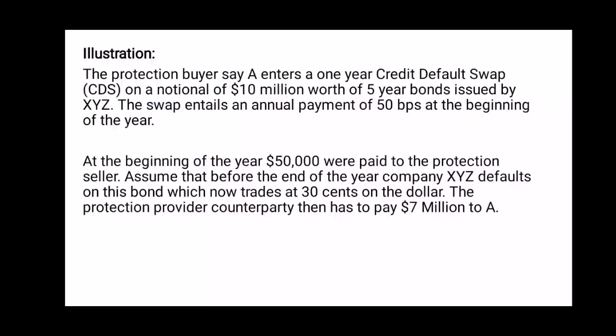To summarize the illustration: protection buyer A enters into a 1-year credit default swap on a notional of 10 million US dollars worth of 5-year bonds issued by XYZ. The swap entails an annual payment of 50 basis points at the beginning of the year — that is, 50,000 dollars paid to protection seller C. Before the end of the year, company XYZ defaults on this bond, which now trades at 30 cents on the dollar. The protection provider then has to pay 7 million US dollars to investor A.